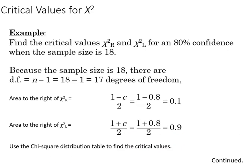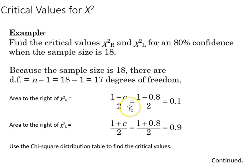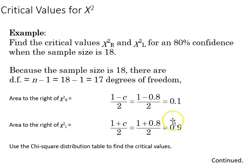Here's an example finding critical values for chi-square. For an 80% confidence interval when the sample size is 18, degrees of freedom equal 17 because it's n minus 1. We find the area to the right for chi-square R, which is 1 minus c divided by 2, or 1 minus 0.8 divided by 2, giving us 0.1. Then the area to the right of chi-square L is 1 plus c divided by 2, which gives us 0.9.